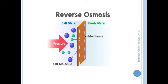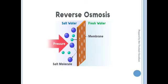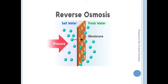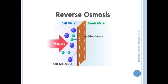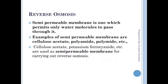In osmosis, water moves from low concentration to higher concentration. In reverse osmosis, water moves from the high concentration towards the low concentration by using external pressure. The semi-permeable membrane permits only water molecules to pass through it.